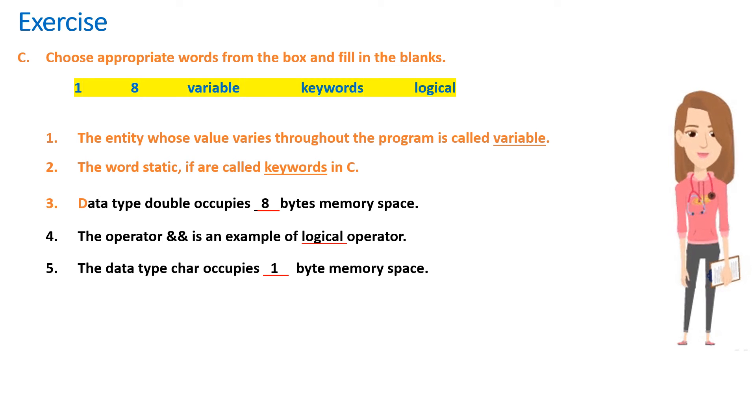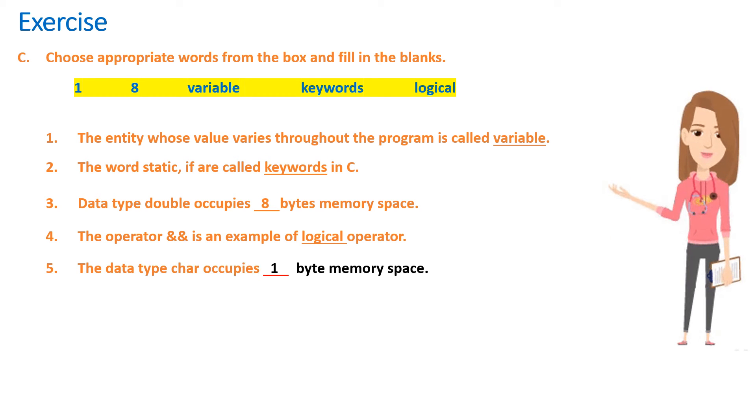3. Data type double occupies 8 bytes memory space. 4. The operator double ion is an example of logical operator. 5. The data type character occupies 1 byte memory space.